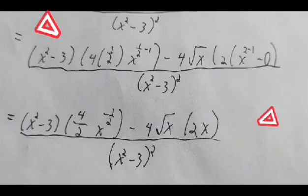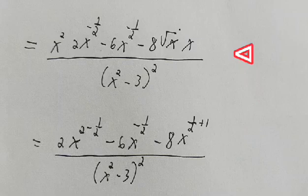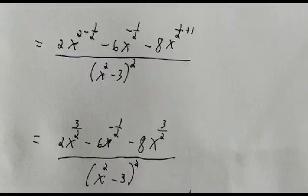Then apply the laws of exponent. It will be x squared times 2x to the power of negative one-half, minus 6x to the power of negative one-half, minus 8 times square root of x times x. Then apply the laws of exponent: 2x squared minus one-half, then minus 6x to the power of negative one-half, then minus 8x to the power of one-half plus 1.